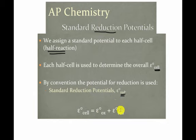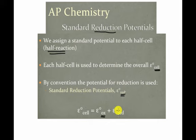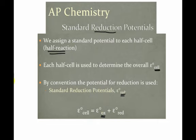What we're going to do is take those reduction half-cells and combine them with oxidation ones. So where do you get the oxidation ones if there's no chart? You should know that reduction is the gaining of electrons, so oxidation would be the loss of electrons. You would just use the same chart — you just have to read it backwards.